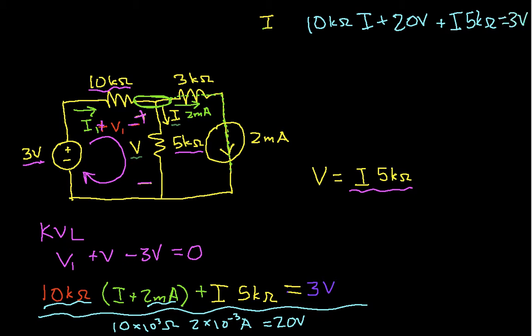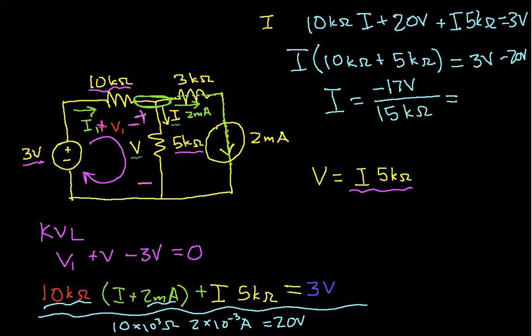I can combine the terms that depend on I. They both have a factor of I. So, I'll have I times 10k ohms plus 5k ohms is equal to this 3 volts minus 20 volts. And doing the algebra, I end up with I is equal to minus 17 volts over 15k ohms, which when I work that out with my trusty Google calculator, I get that this is .00133 amps. But being an electrical engineer, I actually like to write this better as 1.33 milliamps.